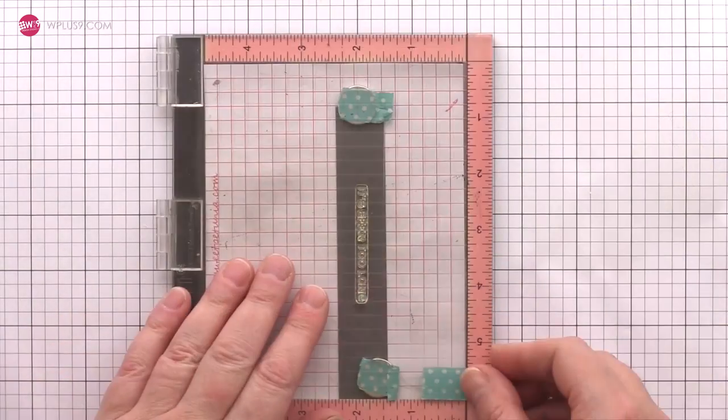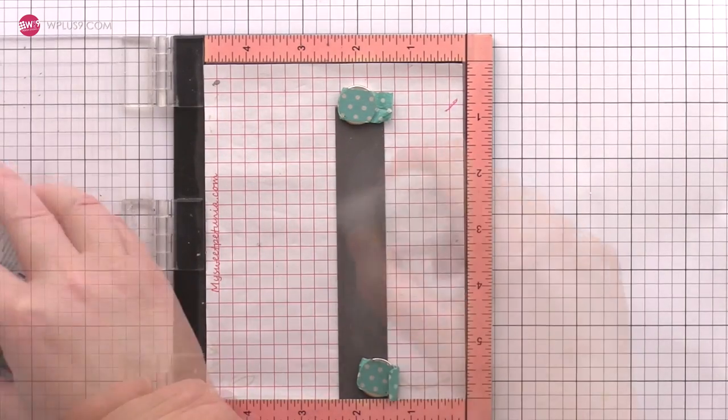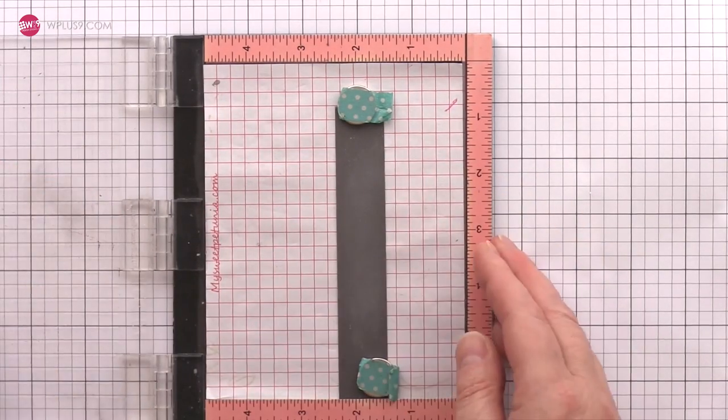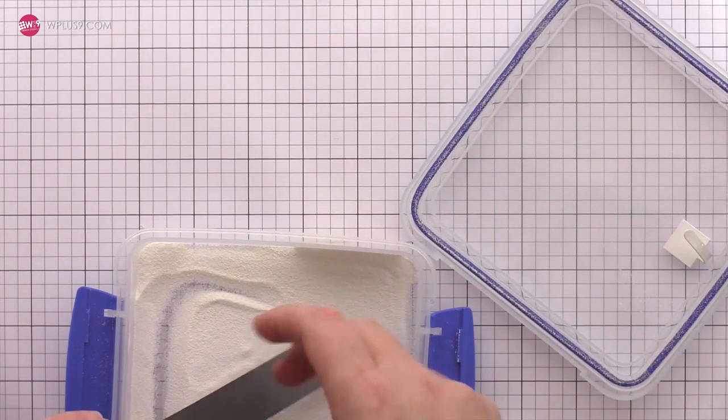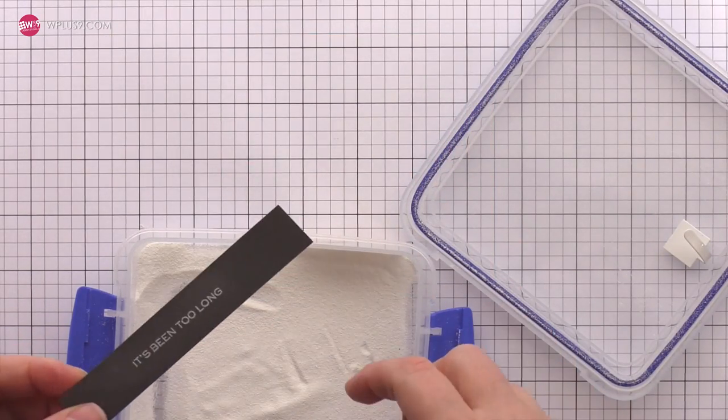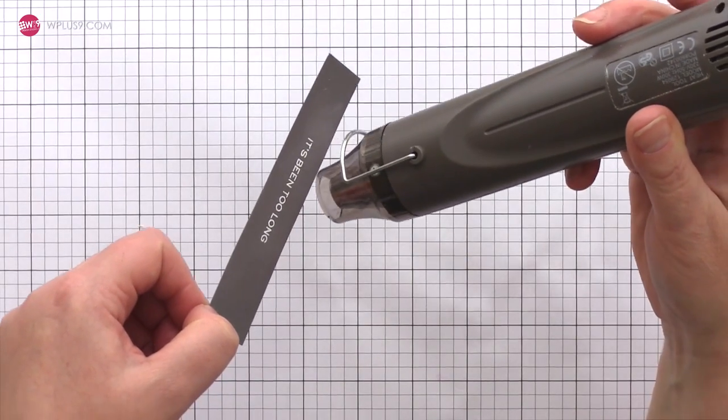And now I want to add a second part to the sentiment which accompanies the heat embossed hello on the window of the shaker. I've got a piece of dark grey card in the MISTI and again treating it with powder tool before stamping the sentiment with the hand lettered hello set and clear embossing ink, sprinkling with white embossing powder and heat setting before trimming into a skinny banner.